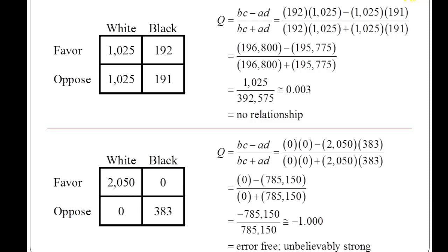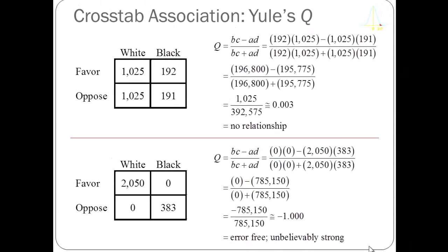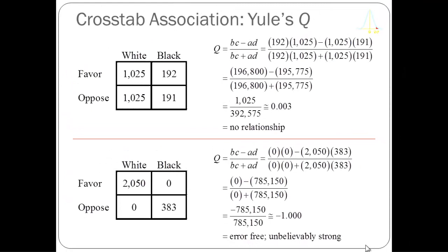If I were to observe the perfect relationship in real data, I would have concerns that I made a calculation error or the data were collected improperly. These two examples show the extremes for Yule's Q: the top table shows no correlation between race and capital punishment attitudes, and the bottom shows that knowing one's race perfectly predicts one's attitude. Yule's Q will typically fall between minus one and one, with zero implying no relationship.